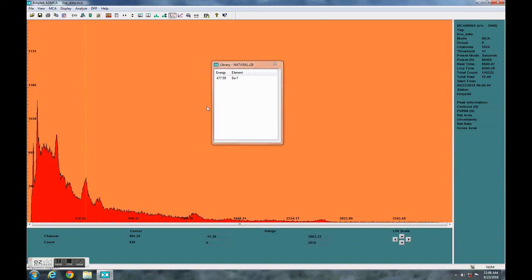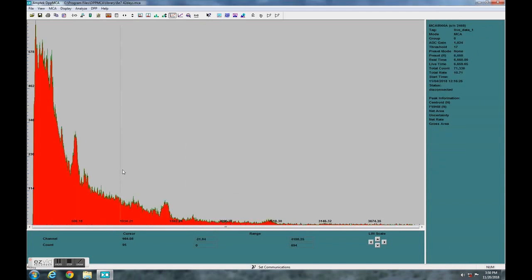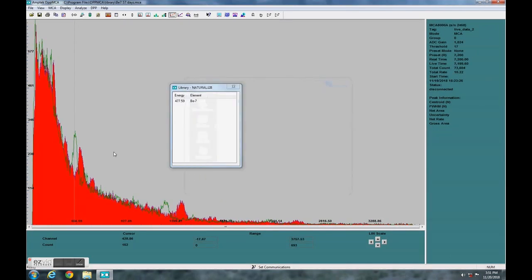The original sample was about 436 counts, adjusted for the acquisition time it's about 471 counts. After 42 days, 318 counts, and at 57 days was only 263 counts. So we can see there's a clear decrease.